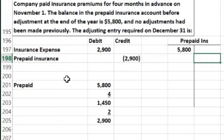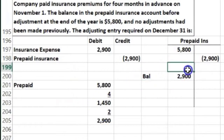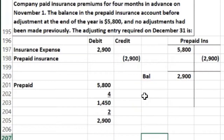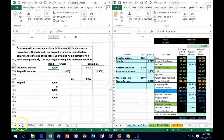That $2,900 is also the credit to prepaid insurance. The remaining balance in prepaid insurance is $5,800 minus $2,900. They asked for the journal entry this time, but a question like this could also ask what was expended or what's left in prepaid insurance. It happened to be half the four-month policy — two months expired — so those two numbers are the same. But if only one month had expired, they would not be the same.